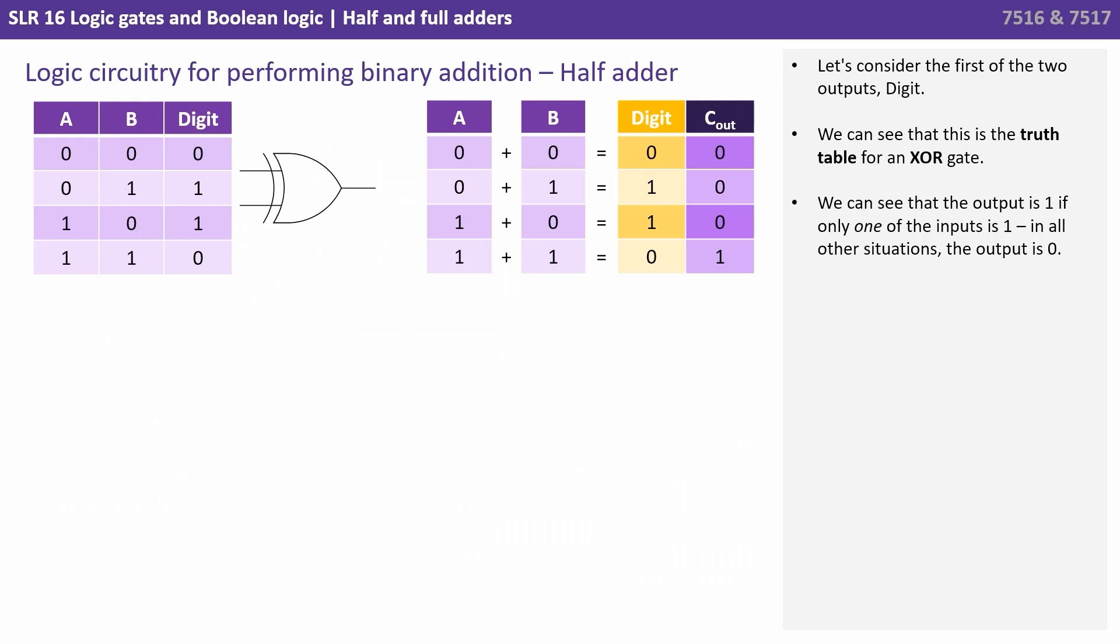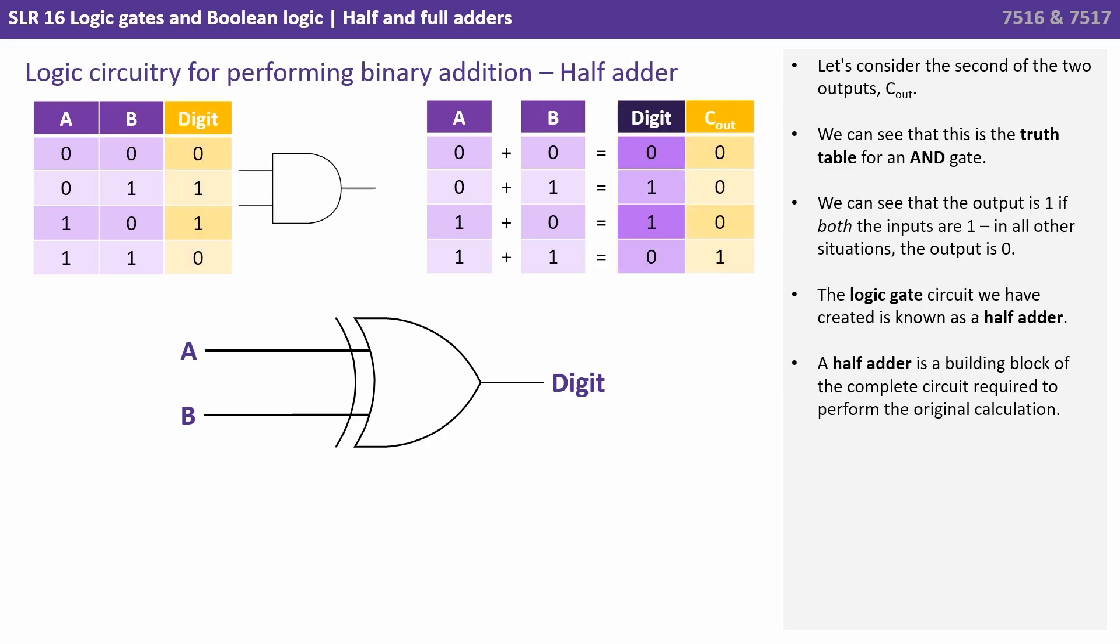Let's consider the first of the two outputs digit. We can see that this is the truth table for an XOR gate or an exclusive OR gate. We can see that the output is one if only one of the inputs is one. In all other situations the output is zero. Let's consider the second of the two outputs c out. We can see that this is the truth table for an AND gate. We can see that the output is one if both the inputs are one. In all other situations the output is zero.